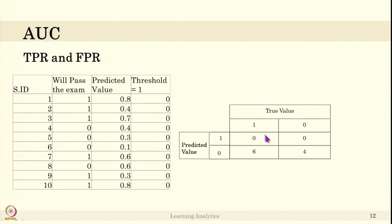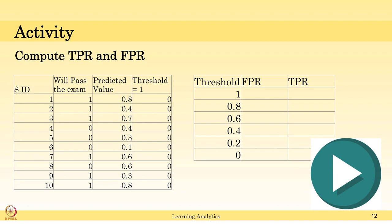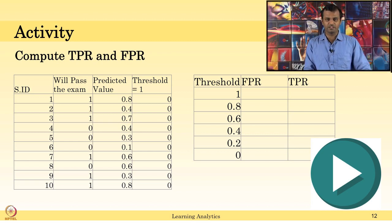For example, if we assume everyone is not pass, but 6 students actually passed (class 1) and 4 did not (class 0), then the true positive rate is 0 divided by 6, which equals 0. The true negative rate is 4 divided by 4 plus 0, which equals 1 — that is specificity. I want you to stop the video, compute false positive rate and true positive rate for all threshold values using the table from the previous slide.